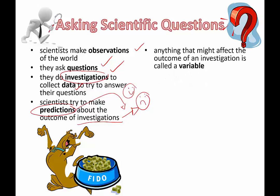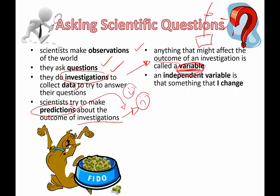Here we're going to get into some specific vocabulary about designing investigations. Anything that might affect the outcome of an investigation is called a variable. So if we're investigating things that can help a plant grow, you might say water, fertilizer, sunlight, or the type of soil. All of those things that could affect the outcome are variables. And then we have to group those into what type of variable they are, depending on the type of experiment.